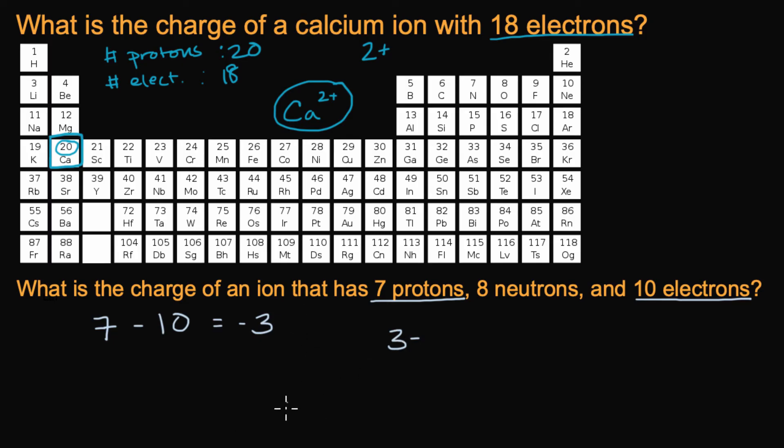And if you wanted to write down what ion that is, once again, we go back to the periodic table of elements. We can see that if you have seven protons, by definition, you are talking about nitrogen. So that would be a nitrogen ion that you would denote like that. It has a negative three or a three minus charge.